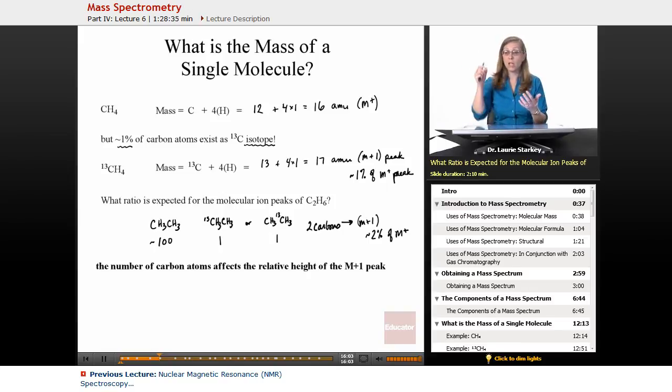And every time we have one of those molecules, they're always going to fall in that same slot where it's one more than the molecular ion. So the take home message is that the number of carbon atoms affects the relative height of the M plus one peak. It's usually very small, but it is going to be there.